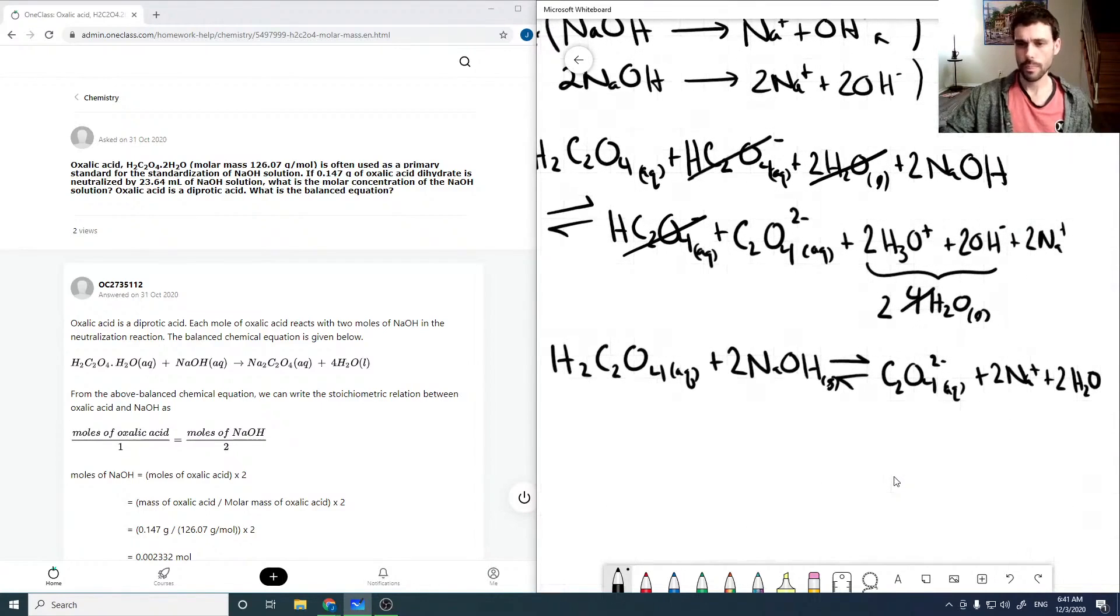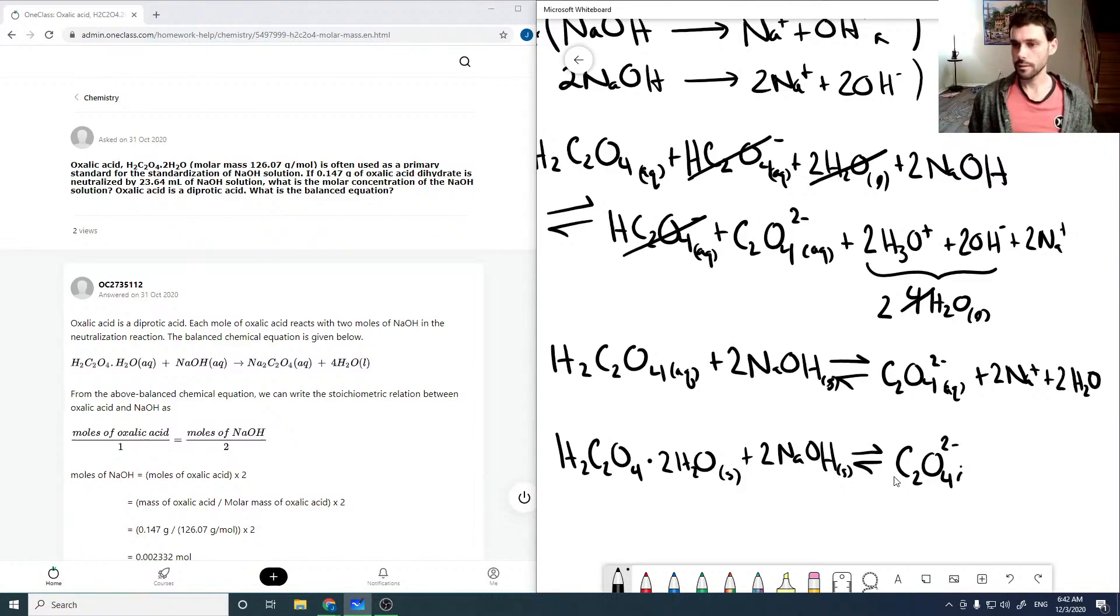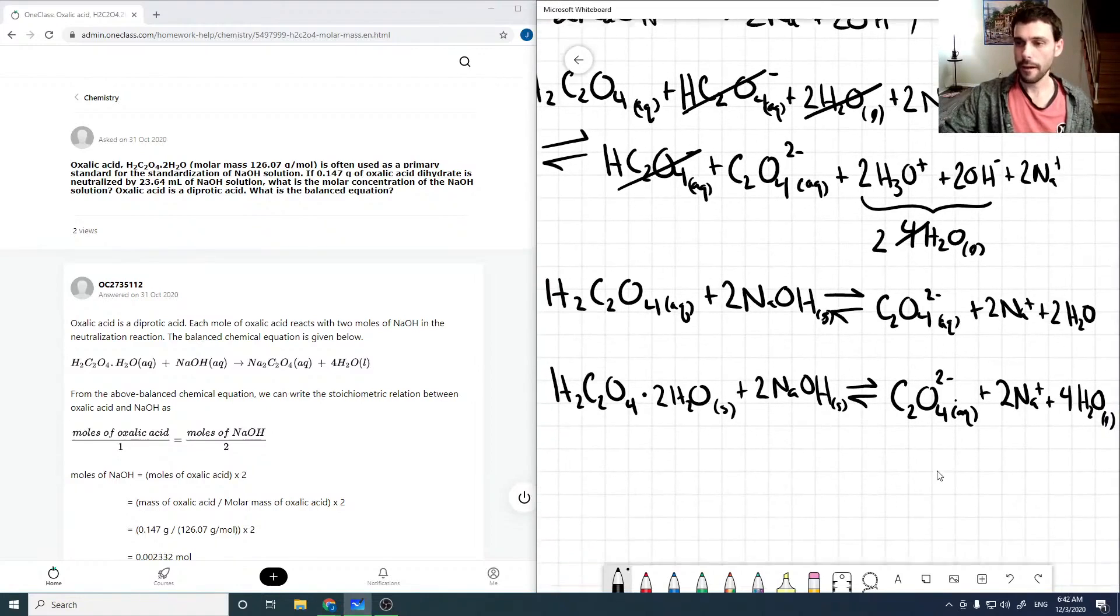And so now, that would be in solution. I suppose we could use the dihydrate notation as well. And so it would just similarly be H2C2O4·2H2O. And this will go to C2O4 2 minus plus 2 Na plus plus 4 water in this case. But as water is our solvent, having 4 water on the right doesn't really change the water concentration.